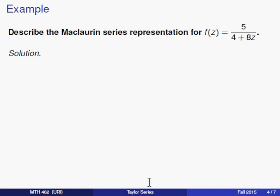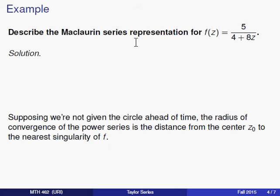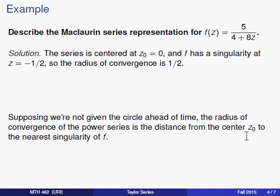All right, let's take a look at an example. Suppose we're asked to find the Maclaurin series for this function given by f(z) equals 5 over 4 plus 8z. Now, the Maclaurin series, you'll remember, is the power series expanded about the point 0. All right, now, to start this out, you'll remember that we can find the radius of convergence without even expanding in a series. So let's do that first. We're describing the Maclaurin series, and one thing we can say is that since the center is 0, and the singularity of this function, the only singularity, happens at z equals negative 1 half, the radius of convergence is going to be the distance between those two. So the radius of convergence is 1 half.